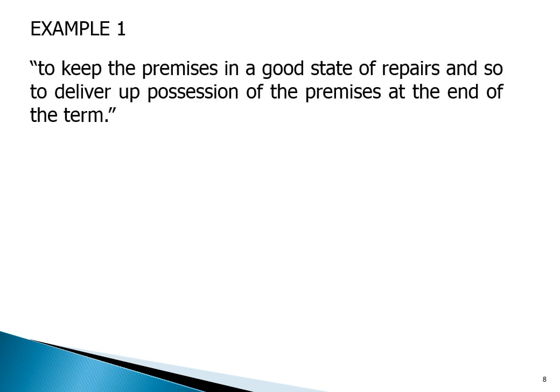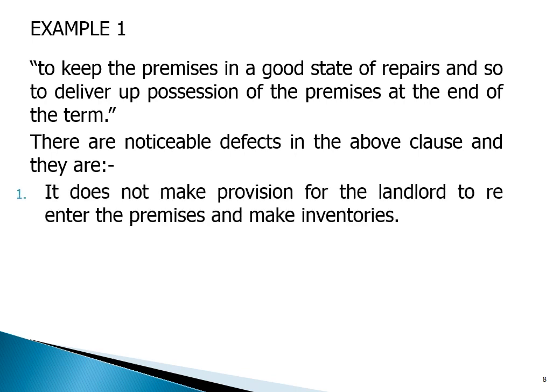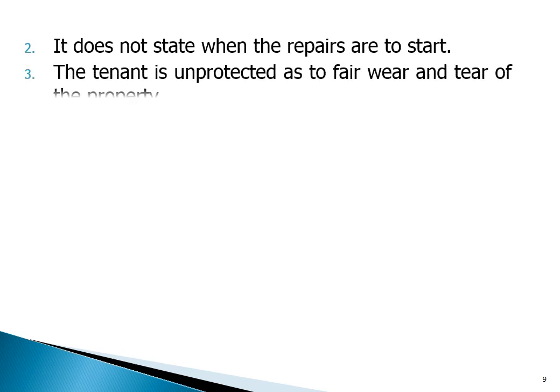Example one: 'to keep the premises in a good state of repairs and so to deliver possession of the premises at the end of the term.' There are noticeable defects in the above clause: one, it does not make provision for the landlord to re-enter the premises and make inventories; two, it does not state when the repairs are to start; three, the tenant is unprotected as to fair wear and tear of the property.